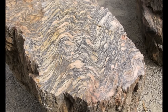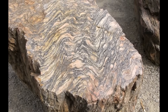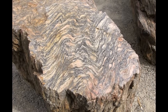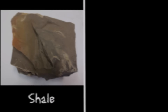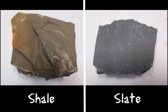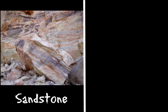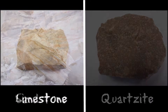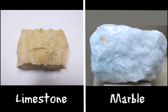Different types of rocks become different types of metamorphic rock when exposed to heat and pressure. For example, shale becomes slate, sandstone becomes quartzite, and limestone becomes marble.